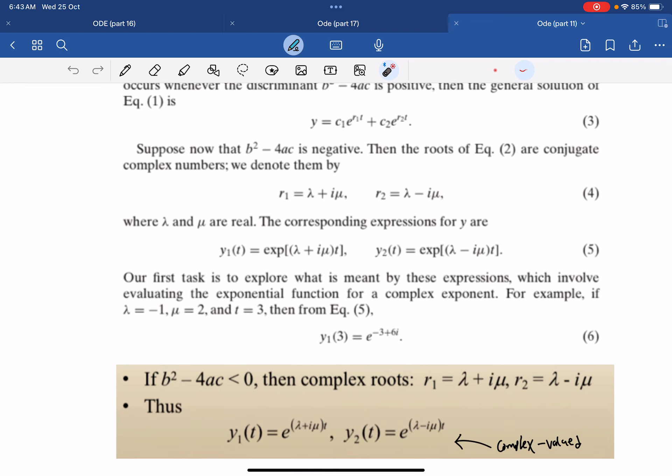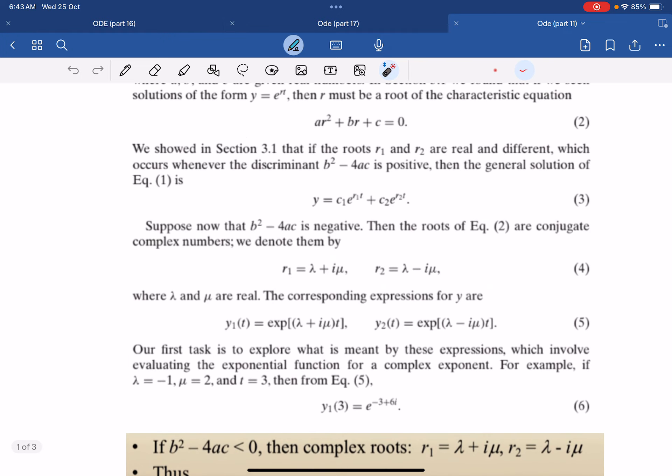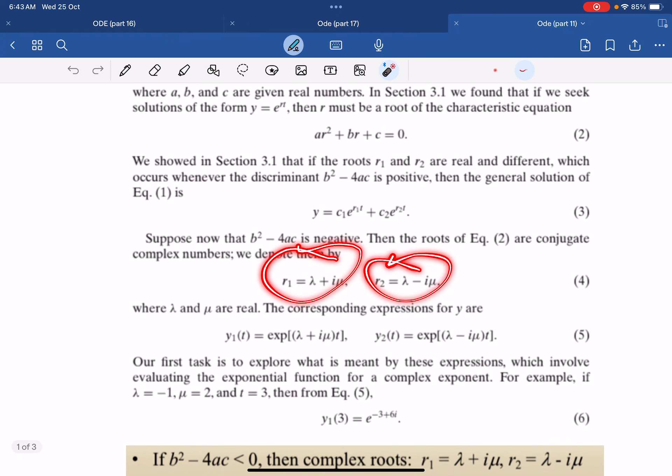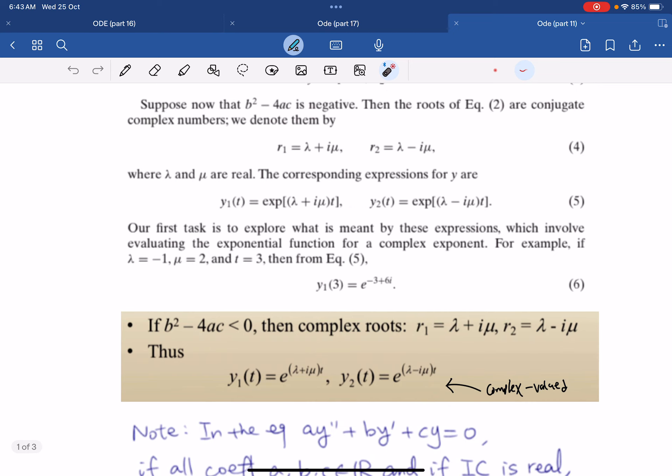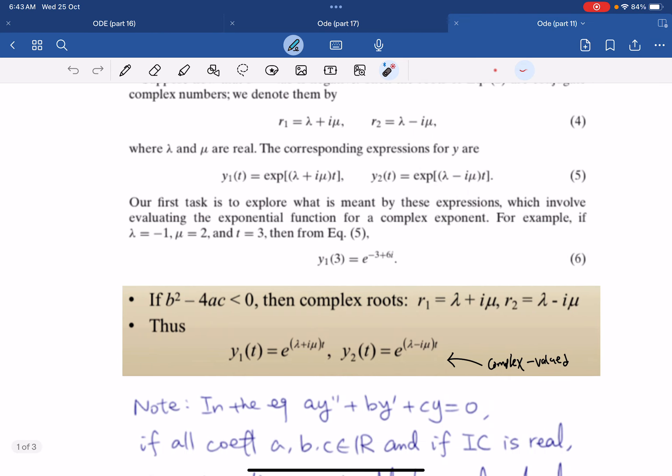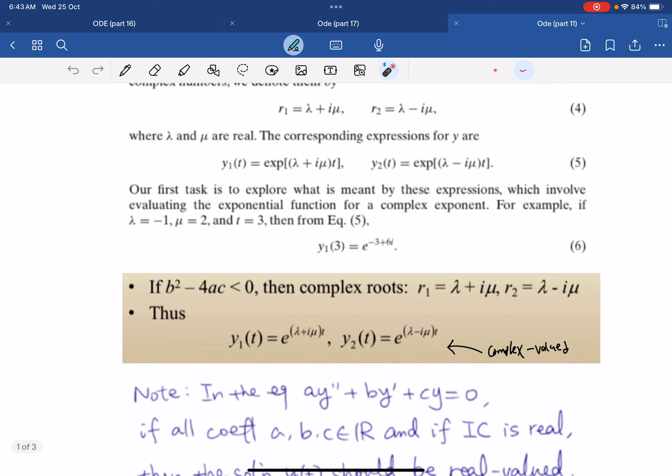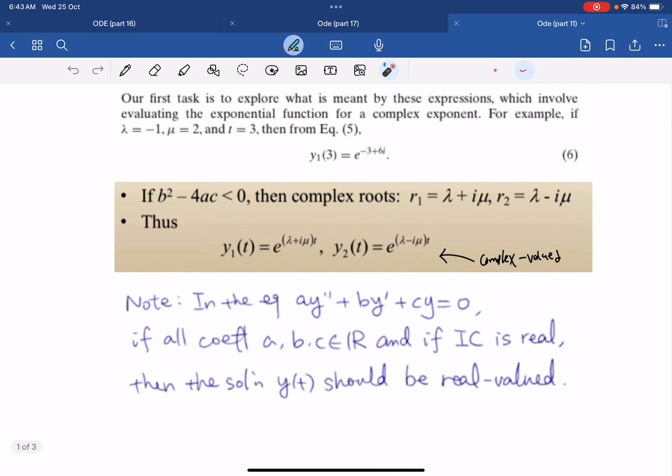Then we can rewrite this y1 into exponential of r1 t. So r1 now is this, exponential of this and y2 will be this. So what we understand is now we treat the complex roots as distinct roots. And with that, we are arrived to this complex valued function.